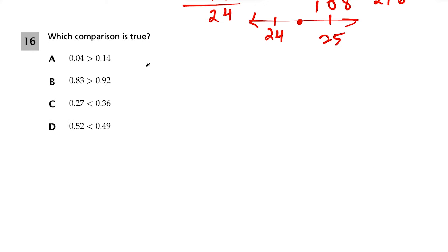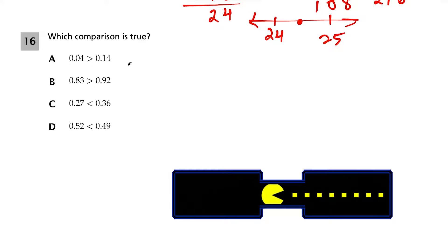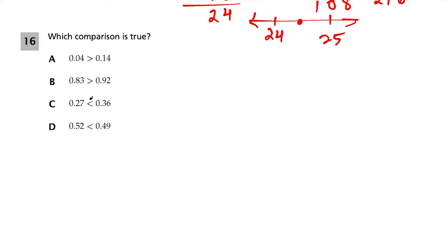Question 16. Which comparison is true? The less-than sign looks like an L. Think of Pac-Man: he prefers to eat the bigger number. Choice C is correct: 0.27 < 0.36, because 27/100 is less than 36/100. When fractions have the same denominator, the greater fraction has the greater numerator.